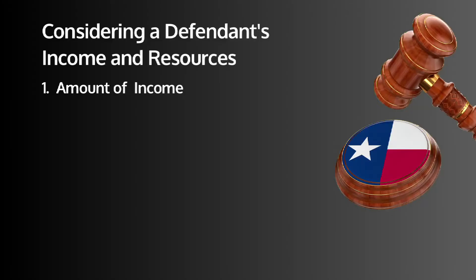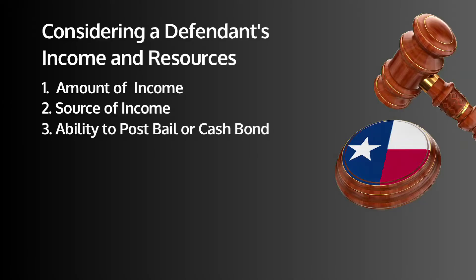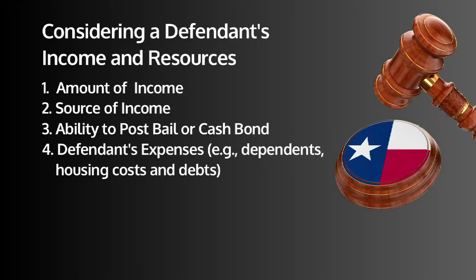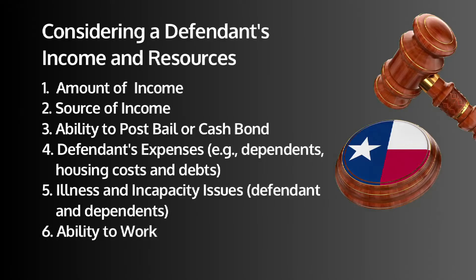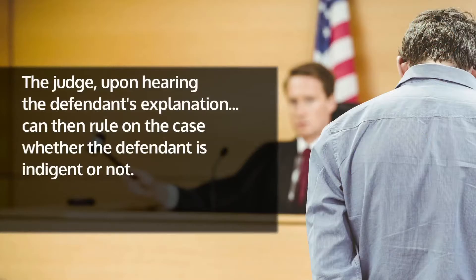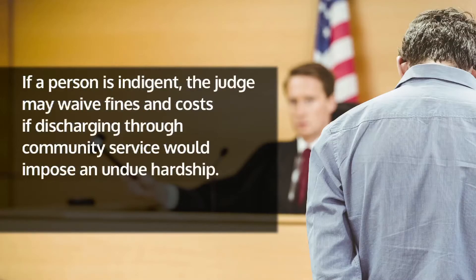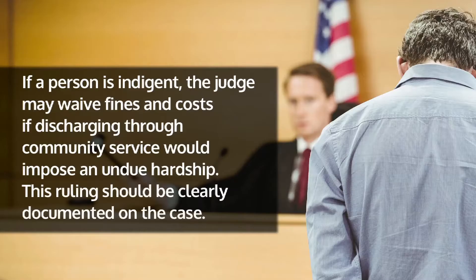A court can document a fine of undue hardship if the defendant cannot do the community service by having the defendant bring proof of medical or financial circumstances preventing them from completing the community service assignment, and or have the defendant appear personally to show cause why community service cannot be performed. The court must document this information in the case file and take it into consideration to make a determination as to how to proceed. The judge, upon hearing the defendant's explanation for defaulting on the court order, can rule on whether the defendant is indigent or not. If a person is indigent, the judge may waive the fines, fees and costs, and this ruling should be clearly documented on the case.